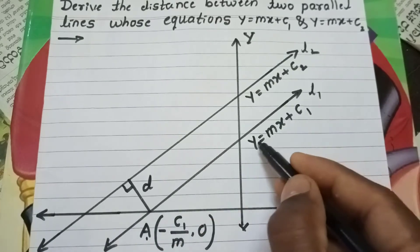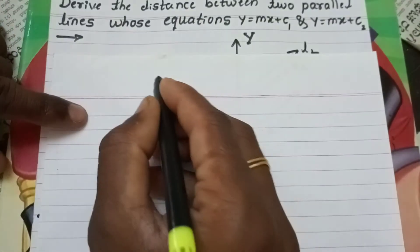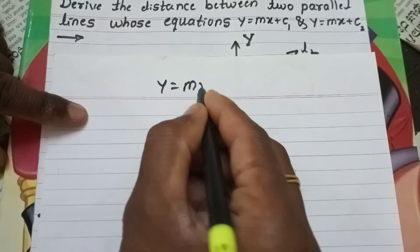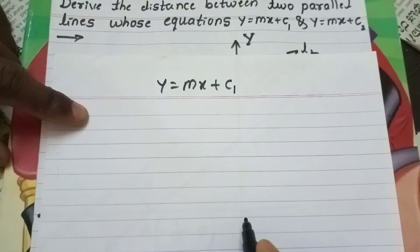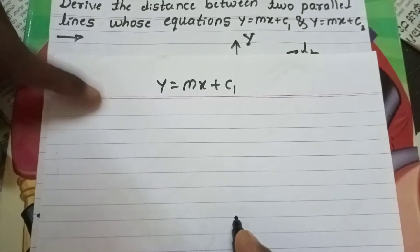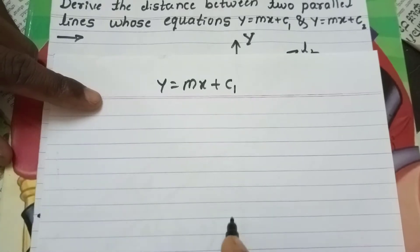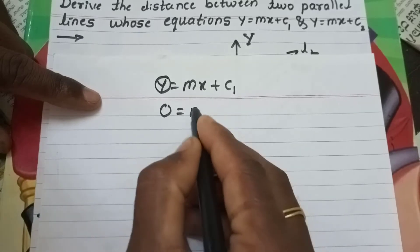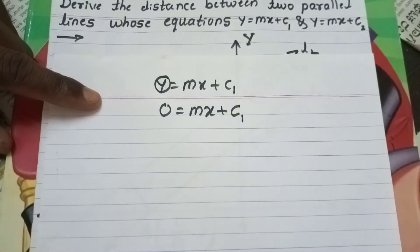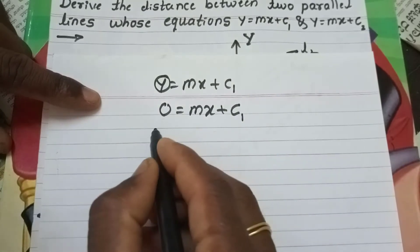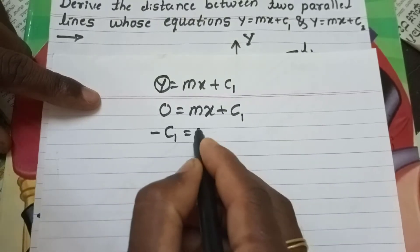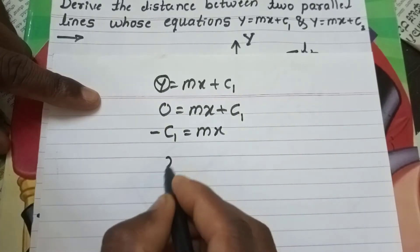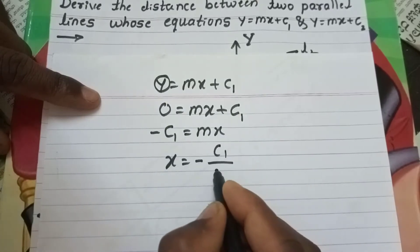The straight line L1 is y = mx + c1. When the line crosses the x-axis, the y value is 0. So substituting y = 0: 0 = mx + c1, which gives x = -c1/m.